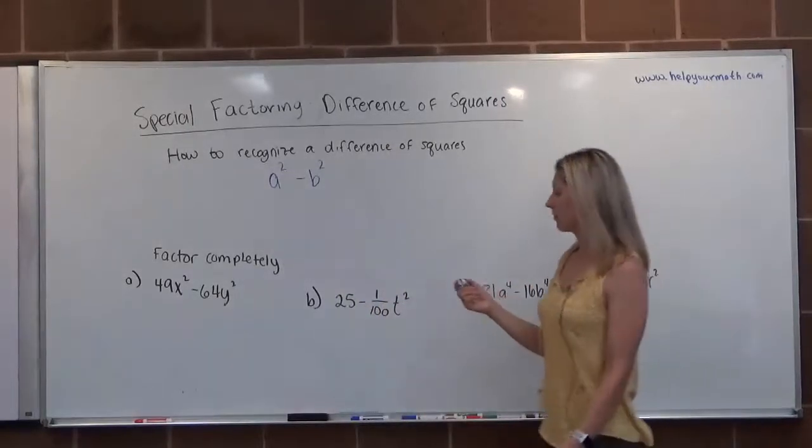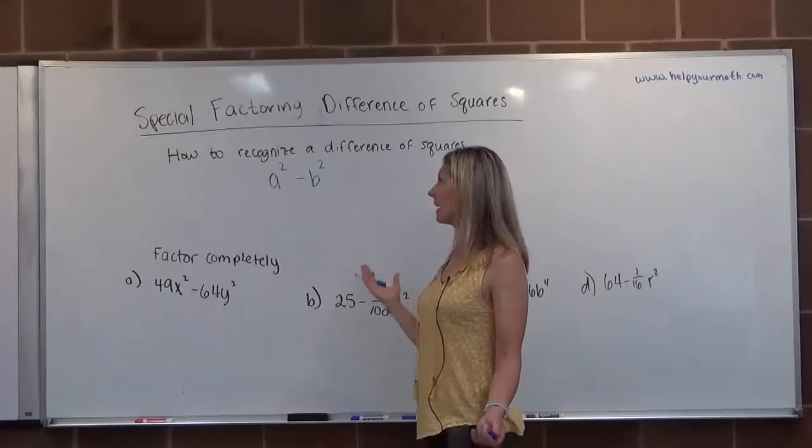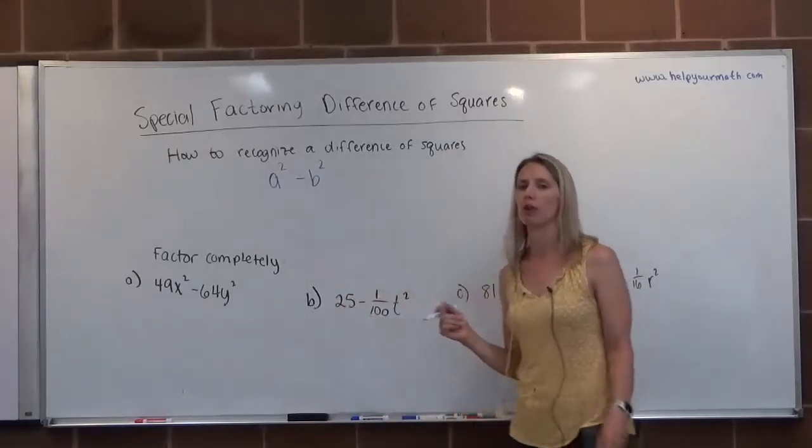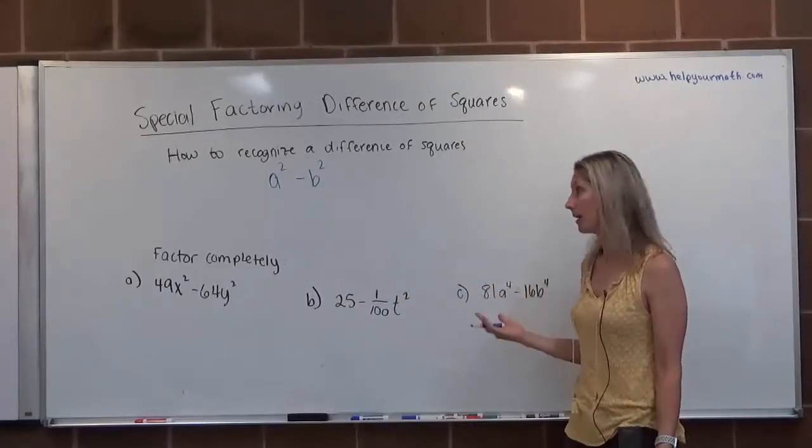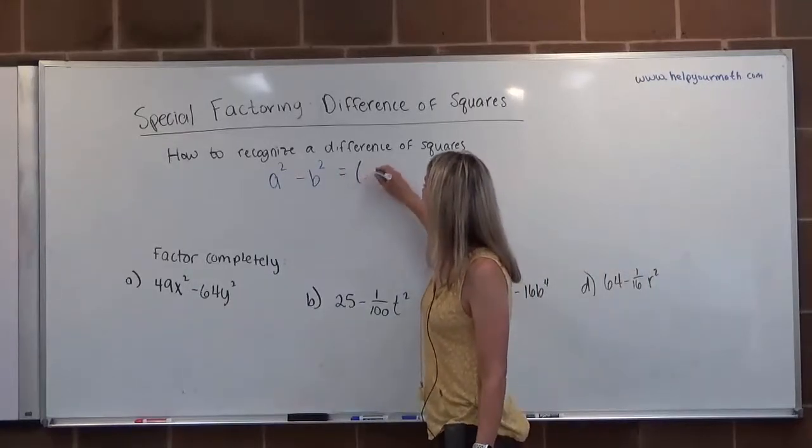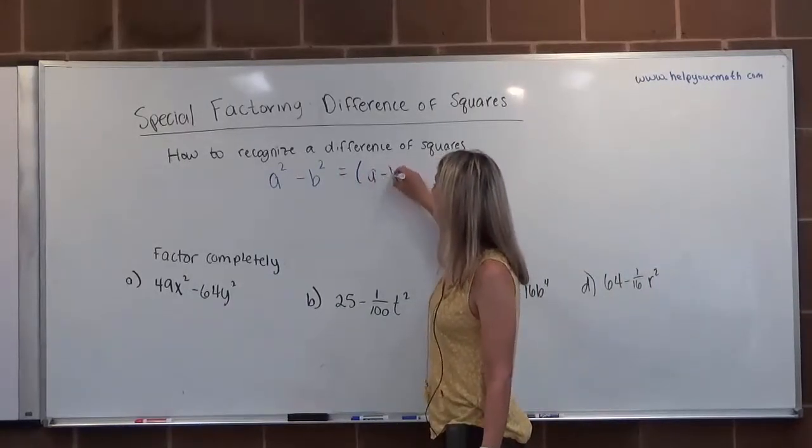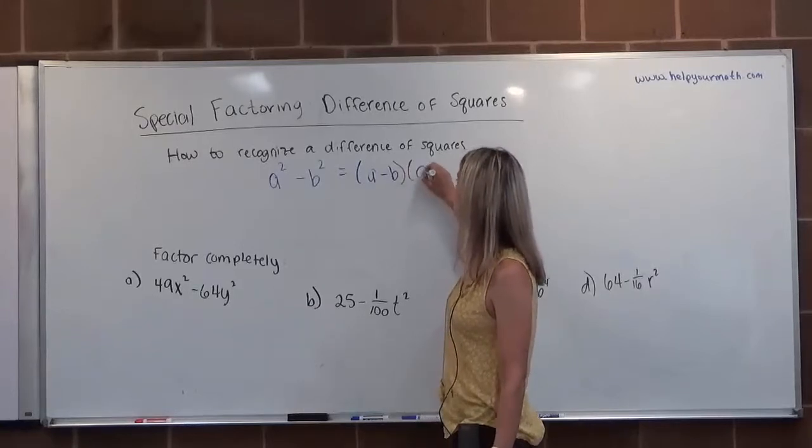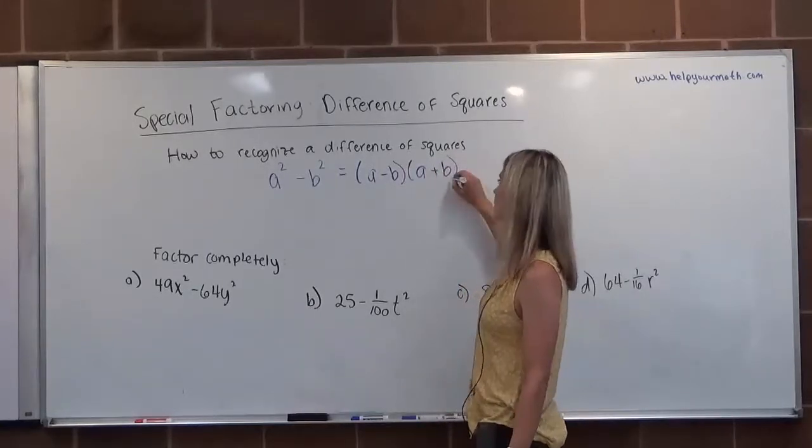When we go to factor a difference of squares, this is a rare case, because usually when we factor we're factoring trinomials. But here, we're actually factoring a binomial. And what it factors into is the root of the first minus the root of the second times the root of the first plus the root of the second.